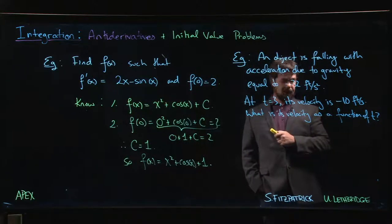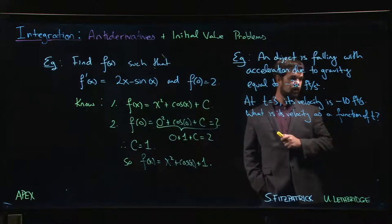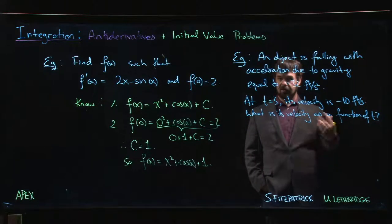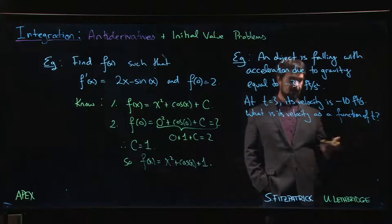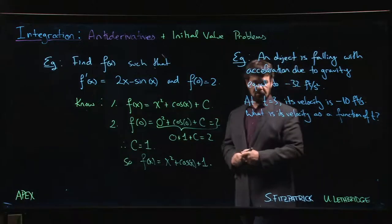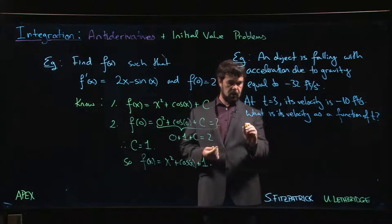We know that at time t equals 3, velocity is minus 10 feet per second, and now we want to figure out based on that information what's the velocity for any other time.